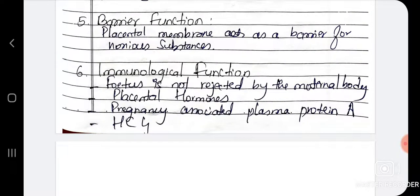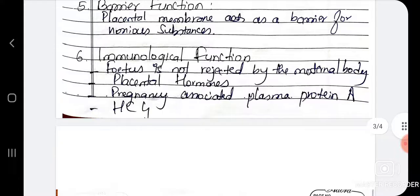Then the barrier function, which is very important. The placenta acts as a barrier — the placental membrane acts as a barrier for noxious substances. For example, if the mother is suffering from HIV, it will not transfer to the baby because of this barrier function. Similarly, if mother has hepatitis B infection, the blood circulation is shared but the infection doesn't transfer because of this barrier.